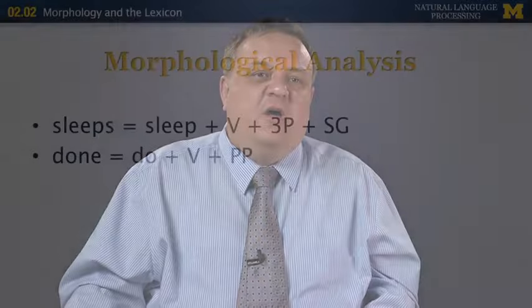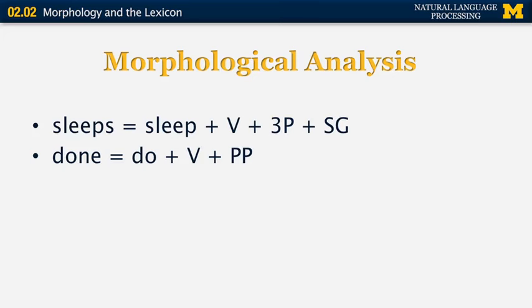Morphological analysis is an area of natural language processing that takes a word and converts it into a morphological representation. This is related to stemming, but it does more — it also gives you the part of speech and morphological information associated with the word. For example, 'sleeps' is translated as the infinitive 'sleep,' then a label for verb, third person, and singular. The word 'done' is translated as the infinitive 'do,' followed by V and PP, which stands for past participle.